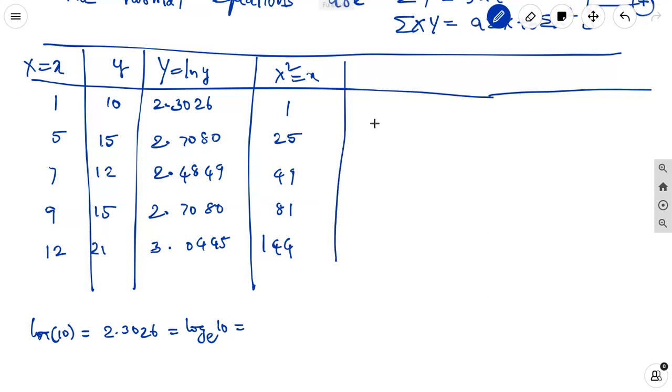Next multiply with xy. This is xy means 2.3026 only. Next 5 into this one is 13.54. Next 7 into 2.4849 is 17.3943.